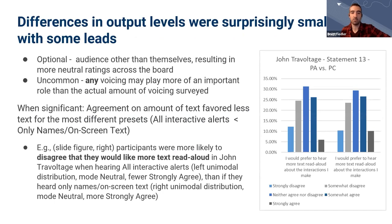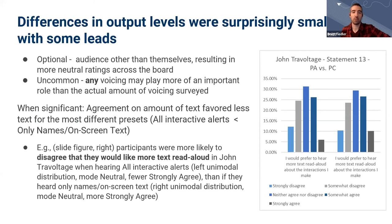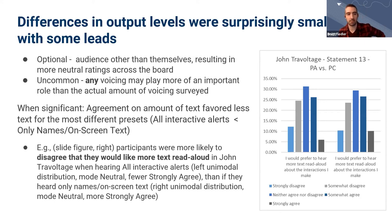For our second question — whether preference changed with the amount of voicing — we did not find compelling consistent evidence in ratings between output level presets or comments about the amount of spoken description, but the data provided some leads. We suspect moderate differences and neutral ratings may arise from the fact that voicing is optional and participants may view it as for an audience other than themselves, or that any voicing at all may play more of an important role than the actual amount of voicing. When results were significant, they tended to favor less text when comparing all interactive alerts enabled versus only names and on-screen text.